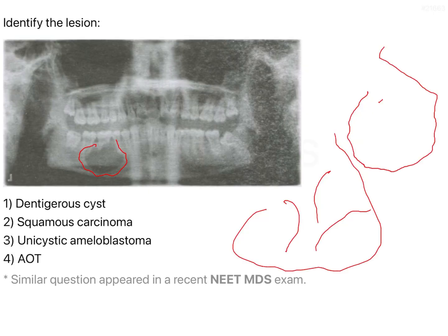Coming to the question, amongst the options given — dentigerous cyst, squamous cell carcinoma, unicystic ameloblastoma, and AOT — a dentigerous cyst is more often than not a unilocular lesion, but one of its most important features is that it is associated with an impacted tooth. In this image, you can very clearly see that there is no impaction present, so it is not a dentigerous cyst and you can omit it.